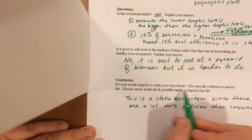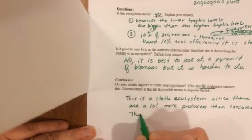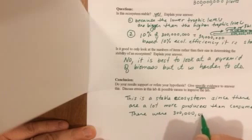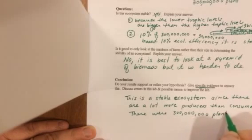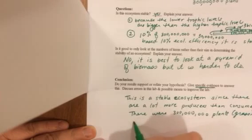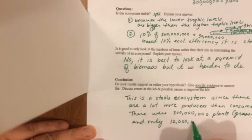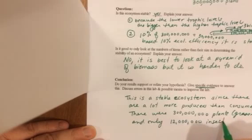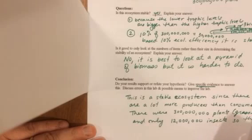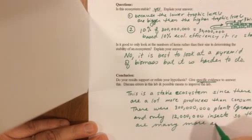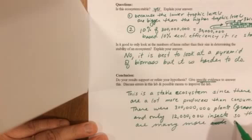And then specific, give specific evidence. So we could say there were, in my instance, you use your own data, 300 million plants or grass and only 12 million insects. So there are many more plants, or again, I'm going to use the word autotrophs, which are plants.